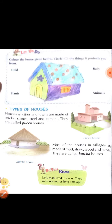Now next, let us do: Color the house given below. Jo picture diya hai uspe color karna hai. Circle the things it protects you from. Aapko protect karta hai jo cheez se, unhe circle karna hai. This is your homework. Aapko ye color fill up karna hai jo aapko protect rakhta hai in sabhi cheez se.